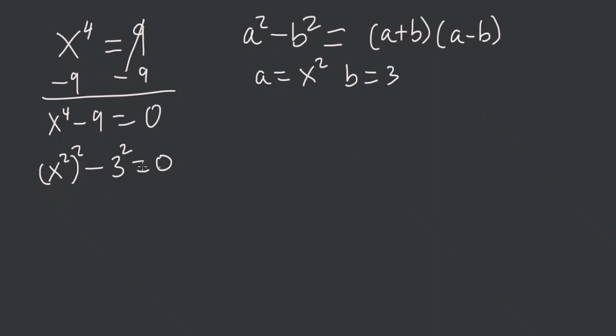So here we have a difference of two squares, like up here. So we have x squared plus 3 times x squared minus 3, like here. And this is equal to 0. So we have x squared plus 3 is equal to 0, or x squared minus 3 is equal to 0.